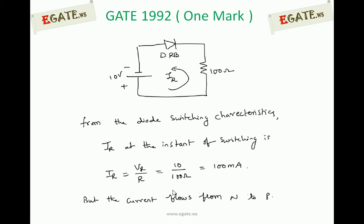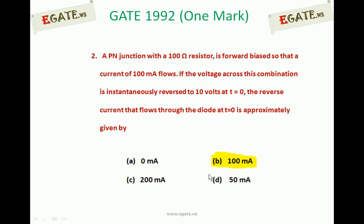The diode is acting as a short circuit, so total resistance is only 100 ohms and the applied voltage is minus 10V. Therefore, IR = VR / R = 10 / 100 ohms = 100 milli-amperes. This current flows from N to P. Because the diode acts as a short circuit, no diode resistance is taken into account — 10 volts divided by 100 ohms gives the reverse current flowing. So the correct option is (b), 100 milli-amperes. Thank you.